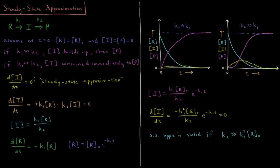In many cases with complex derivations based on these rate laws, we can use a simplification called the steady state approximation. The steady state approximation is the approximation that the derivative of the concentration of an intermediate with respect to time is equal to zero. This allows us to get the concentration of that intermediate in complex mechanisms, which is needed to obtain the rate law for the product.